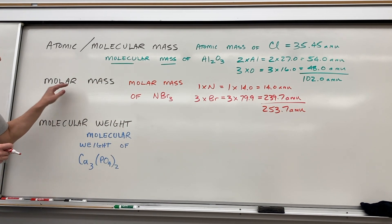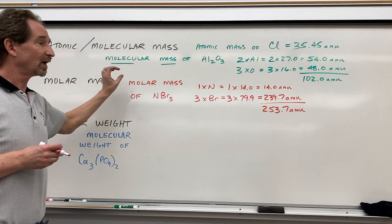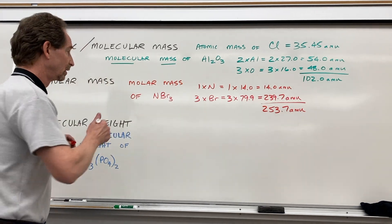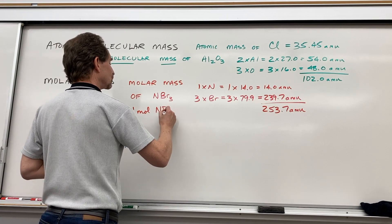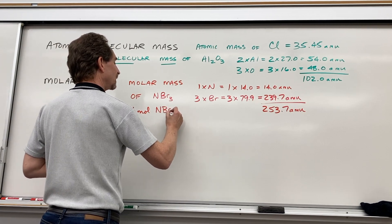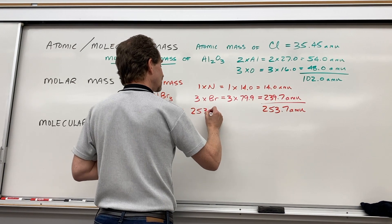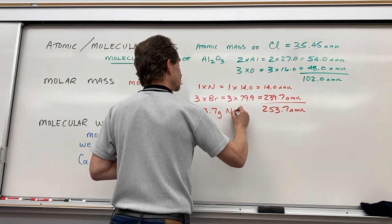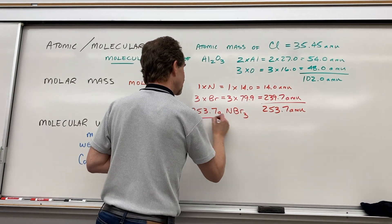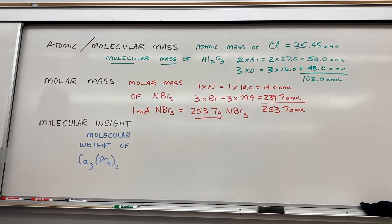We're trying to do molar mass, which is the mass of exactly one mole. So one mole of nitrogen tribromide is now going to be equal to 253.7 grams of nitrogen tribromide. That is how you report the answer of the molar mass — reported in grams.